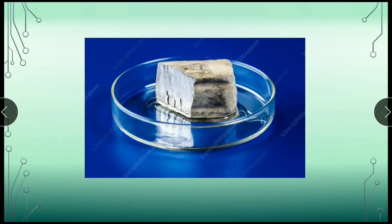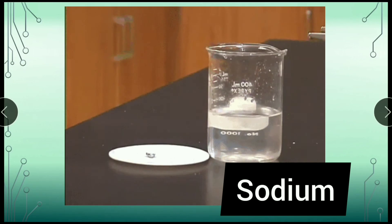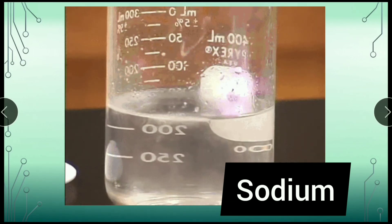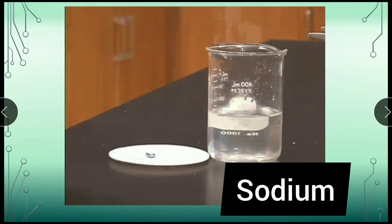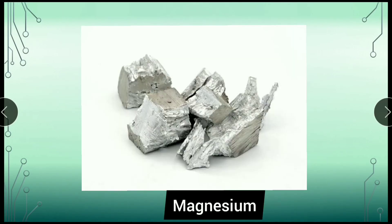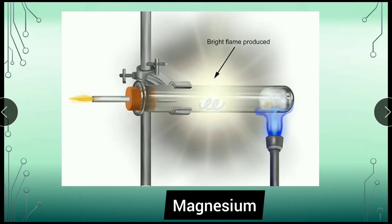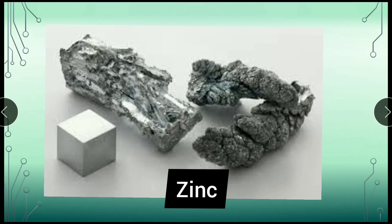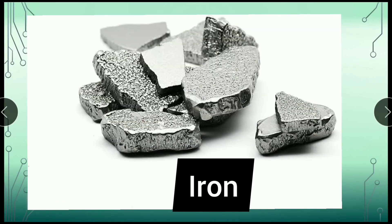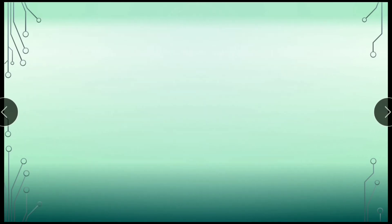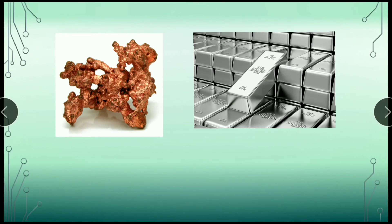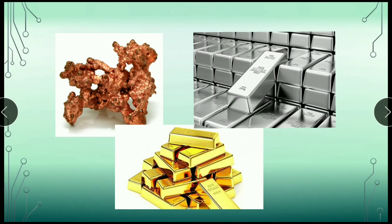Sodium is a very reactive metal and reacts violently even with cold water. Magnesium is comparatively less reactive, so it reacts slowly with cold water but rapidly with hot boiling water or steam. Metals like zinc and iron are less reactive and react slowly even with steam. Metals like copper, silver, and gold are so unreactive that they do not react with water even with steam.